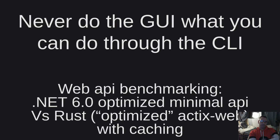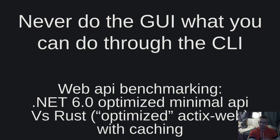Hello dear friends, welcome to another video of the 'never do through the GUI what you can do through the CLI' channel. I am Vangelis and today you are watching web API benchmarking: .NET 6 optimized minimal API vs Rust optimized Actix Web with caching. I have been receiving various comments and requests, including requests to create a video with caching and to optimize further the .NET minimal API, which is what I did. Hopefully this will be the last video comparing the .NET API with the Rust API, and I will proceed to other comparisons like Go or Spring Java.